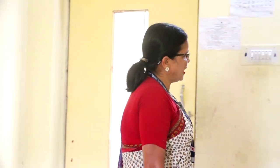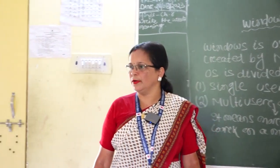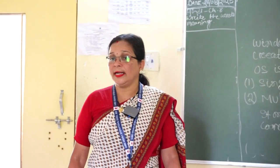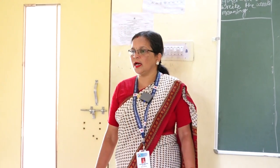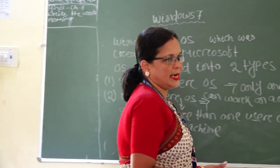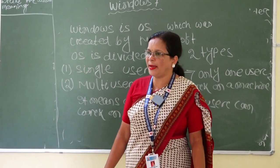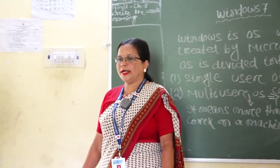So what is operating system? Operating system is a system which activates the computer. It keeps the relationship between user and computer, and it also controls the hardware and software part of a computer. Operating system is divided into two types: single user operating system and multi user operating system. Now clear to everybody? Thank you.